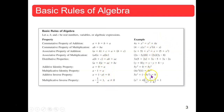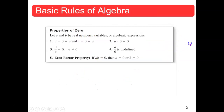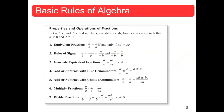For example, the commutative property of addition says that a + b = b + a, where a and b stand for any two real numbers or expressions. One example of this in action: 4x + x² equals x² + 4x. We also have properties of negation and equality, properties of zero, and properties and operations of fractions.